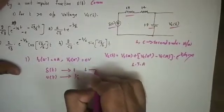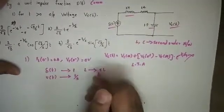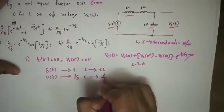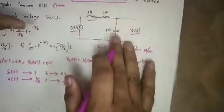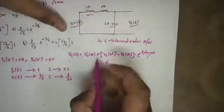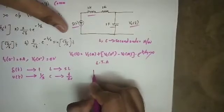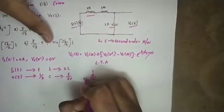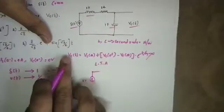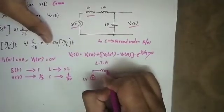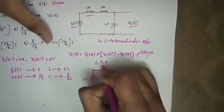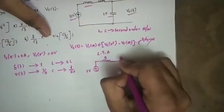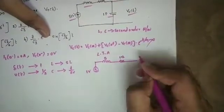In the transform domain, L corresponds to sL = s (since L=1H), C corresponds to 1/sC = 1/s (since C=1F), and the resistance R equals 1 ohm. We apply 1 volt in the transform domain.